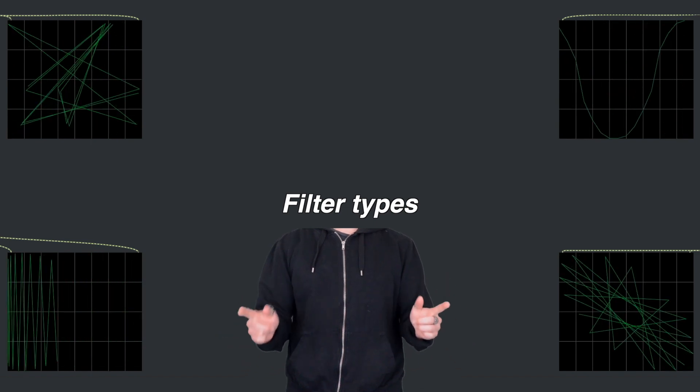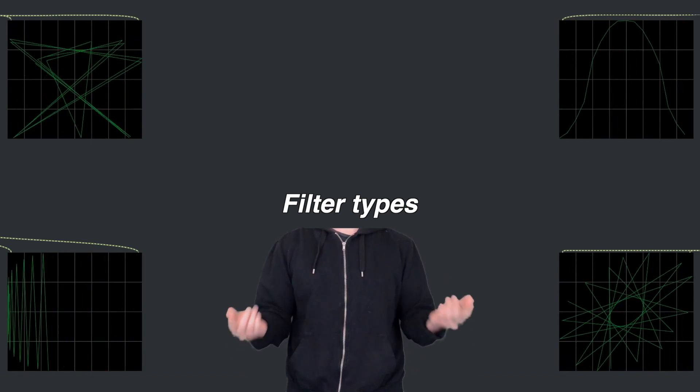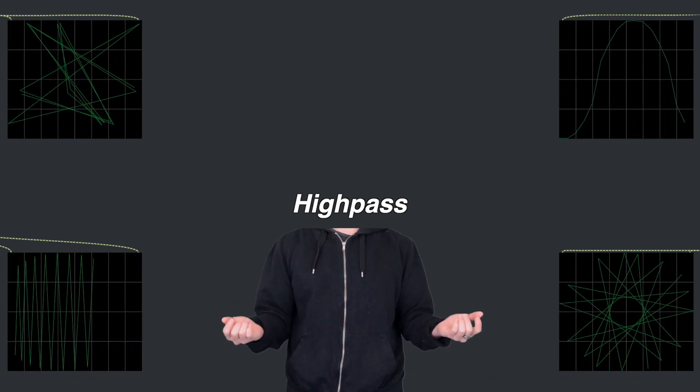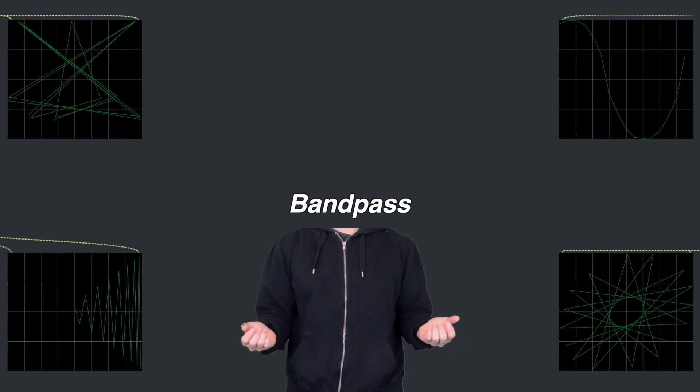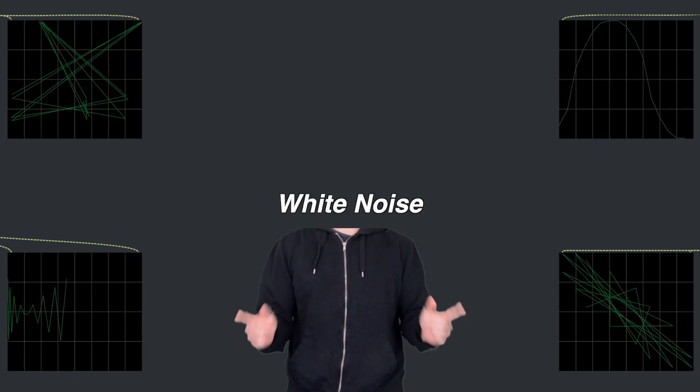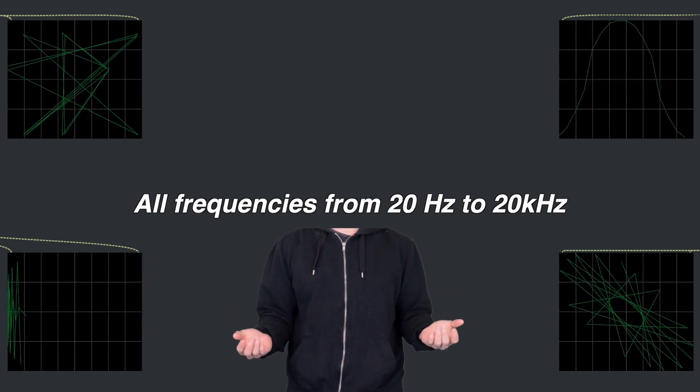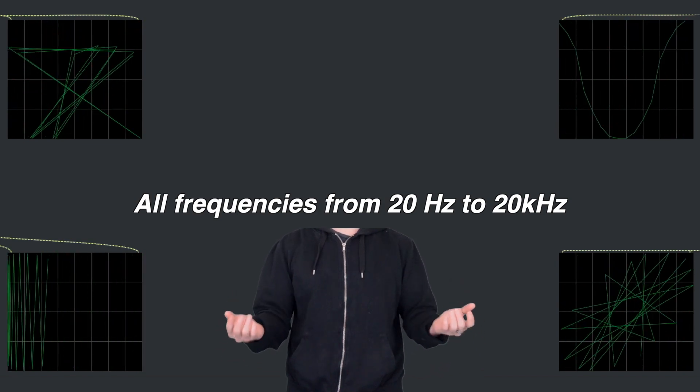Here are different types of filters that we'll be using to sculpt sounds: low-pass, high-pass, and bandpass. To hear these filters in action, we'll be using white noise, which contains every frequency at once from 20Hz to 20kHz.